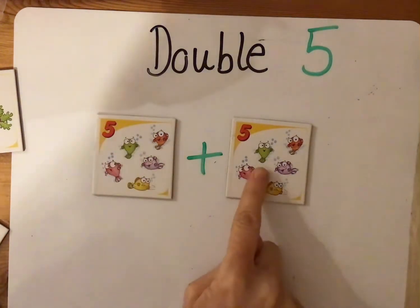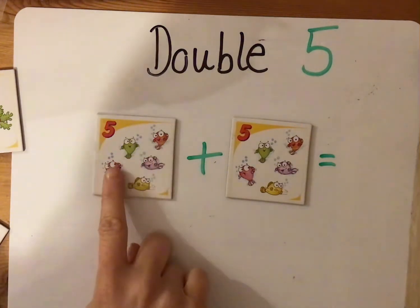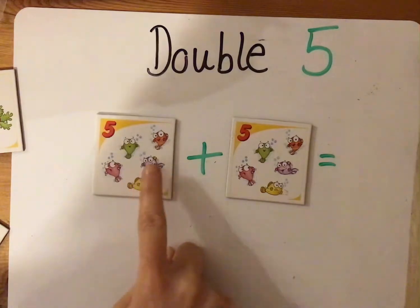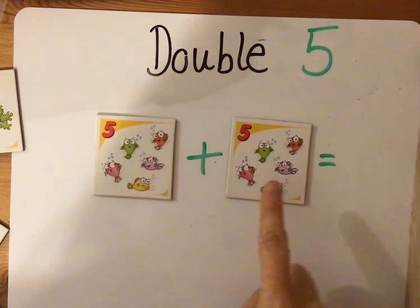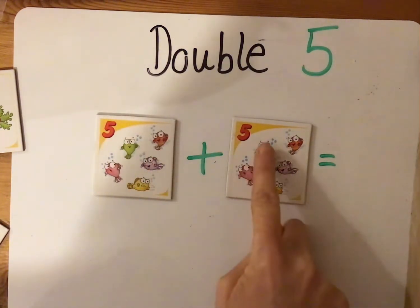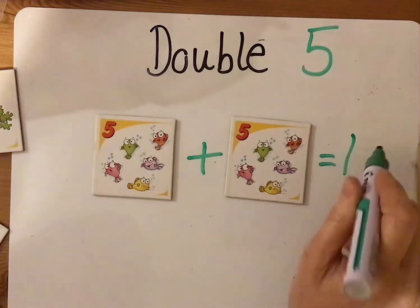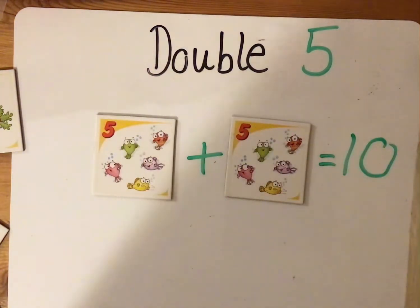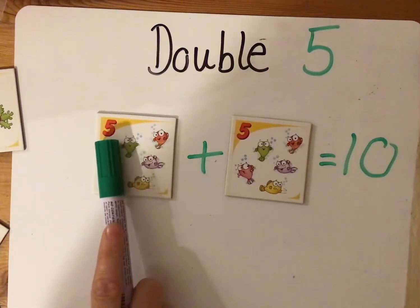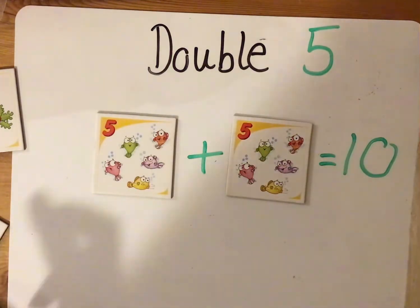So five add five will give us our answer, so let's count. One, two, three, four, five. Add five — six, seven, eight, nine, ten. So double five equals ten because we had five and then we added the same number again and the answer is ten.